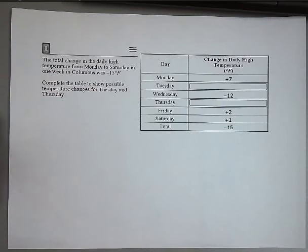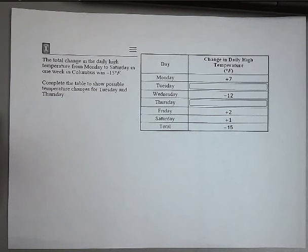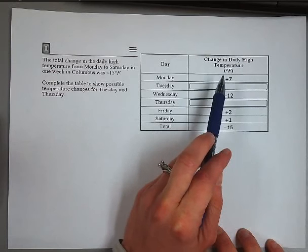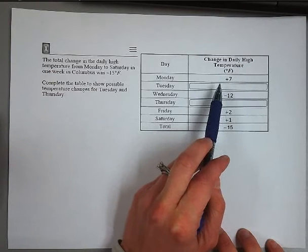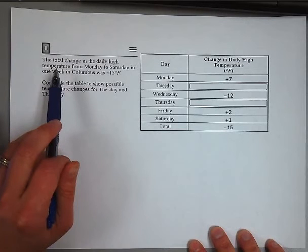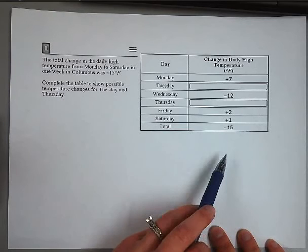The problem reads: the total change in the daily high temperatures from Monday to Saturday in one week in Columbus was negative 15 degrees Fahrenheit. Complete the table to show possible temperature changes for Tuesday and Thursday. Our goal here is to find the total change in daily temperatures. On the right side, the column shows the change in daily temperatures for each day from Monday through Saturday, with Tuesday and Thursday left to fill in. When they say 'total,' they mean the sum of all the days, which adds up to negative 15.